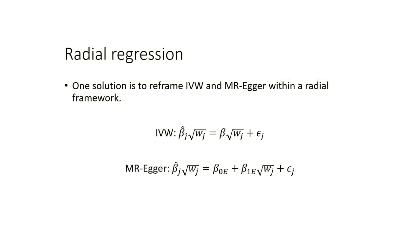Here are the underlying regression models for the radial MR approaches. For inverse variance weighting, we regress the product of the ratio estimates and square-root weightings for genetic variants upon the square-root weightings, omitting an intercept. The regression coefficient beta estimated using this model is equivalent to an IVW estimate using the conventional approach. The radial MR-Egger model consists of the IVW model with the addition of an intercept term beta-0E. This intercept term is interpreted in the same way as for conventional MR-Egger regression, where a non-zero intercept is indicative of directional pleiotropic effects. The coefficient beta-1E represents a causal effect estimate correcting for this directional pleiotropic effect.